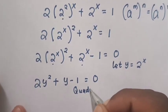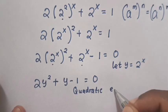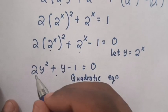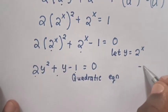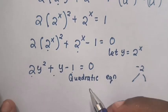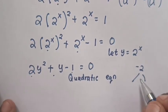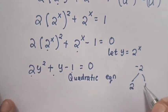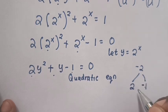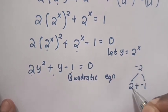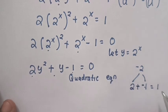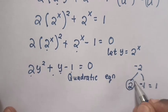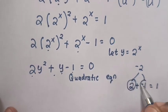This is a quadratic equation. We solve it by factorization. To get the product 2 times negative 1 equals negative 2, we need two numbers that multiply to negative 2 and add to 1. Those factors are 2 and negative 1.